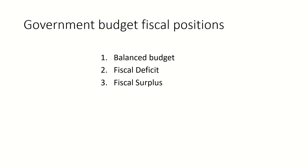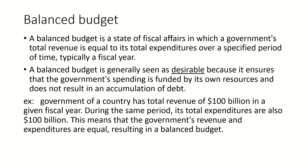There are three government budget fiscal positions: balanced budget, fiscal deficit, and fiscal surplus. A balanced budget is a state of fiscal affairs in which the government's total revenue is equal to its total expenditures over a specific period of time, typically a fiscal year.